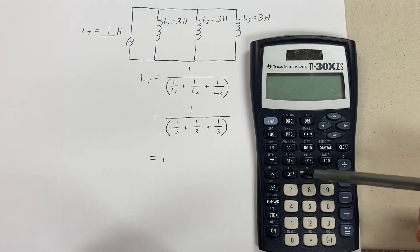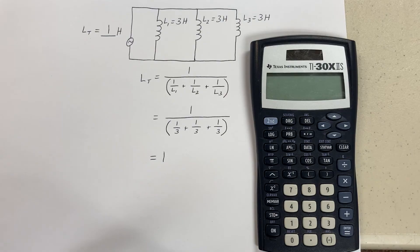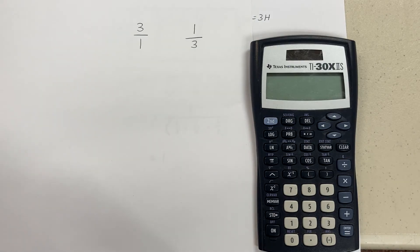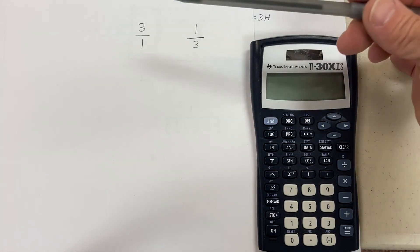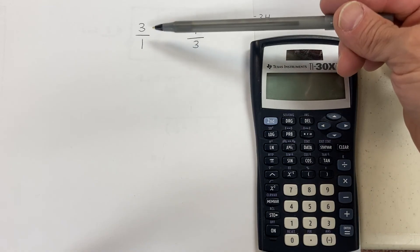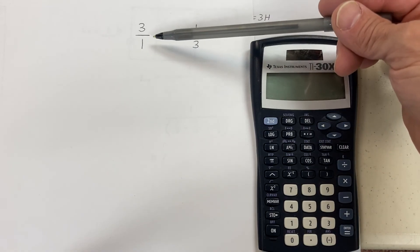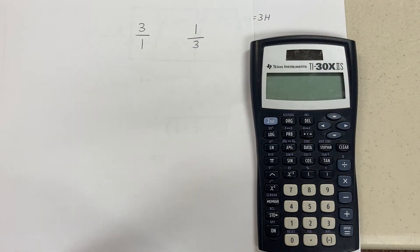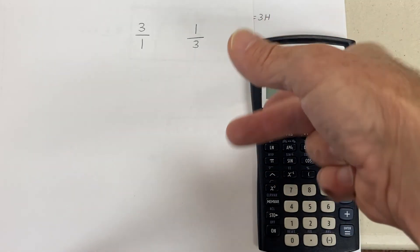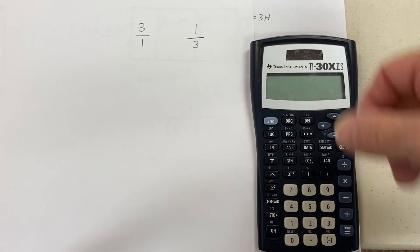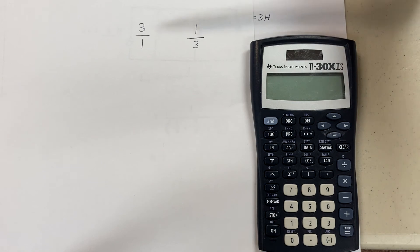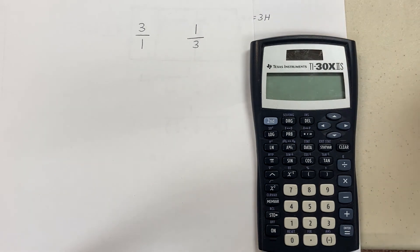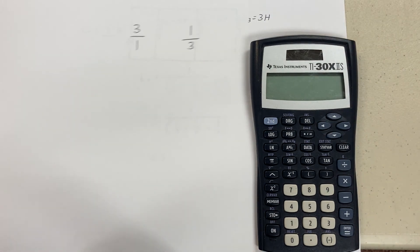To establish what an inverse is, just to remind us: three can be written like this, three over one - another way of writing three. If I take the inverse of something, it's flipping them, so three would become one third. See how it works?